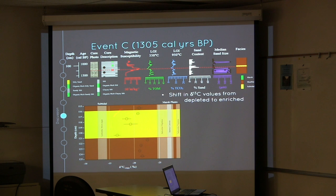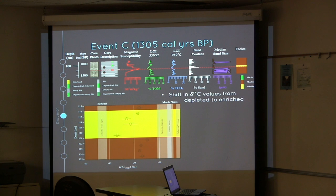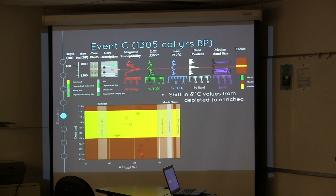Event C was also the event on which we performed stable carbon analyses across the contact. The background color corresponds with the facies — mudflat in brown and sub-tidal in yellow. We also have stable carbon isotope values for sub-tidal environments shown in overlaying gray bars and stable carbon values for marsh plants on the other side. At 125 centimeters, values are very depleted as they go toward the contact, then there's a shift into more enriched values as they cross the contact, slowly becoming more depleted again as they return to the mudflat state.